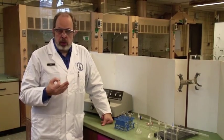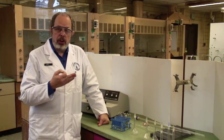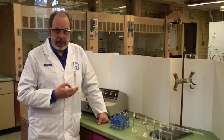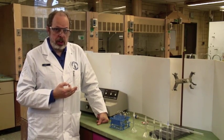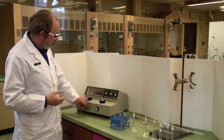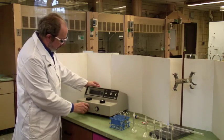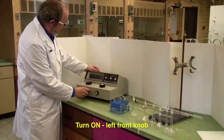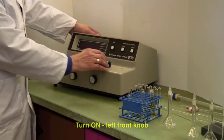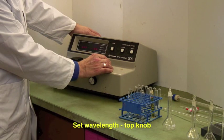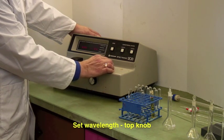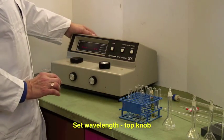You will, in all cases, be monitoring how much of the colored ligand you have produced using a SPECT20. You have used a SPECT20 before, so I'll just give you a quick review. The machine is here, and you turn it on with the left-hand knob here. The first thing you're going to do is set it to the appropriate wavelength. I'm going to use 509, which is exactly what I want.